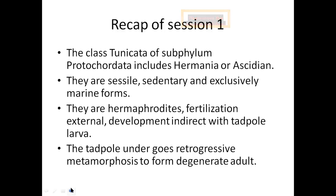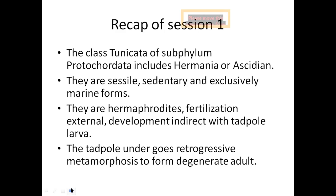Exclusively marine forms means they are present in the ocean — there are no freshwater forms. These organisms are hermaphrodites, meaning both the male and female sex organs are present in the same organism. Regarding their fertilization, the sperm and ovum meet in the water medium, so it is external fertilization. When it comes to development, it is indirect, including the tadpole larva.